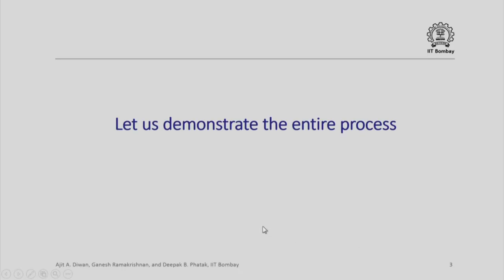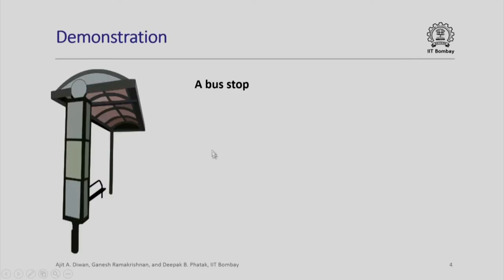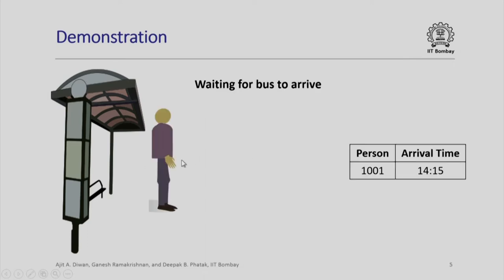Let us demonstrate this entire process of people standing in a bus queue. Here is a sample bus stop — people will come and the buses will come from their side. Here is the first person who comes in. We arbitrarily assign a tag to that person, say 1001, and arbitrarily assign an arrival time, let us say 1415. Note that in real life when we simulate a bus queue, we will have to generate this number randomly. We shall speak about it in a practice problem later.